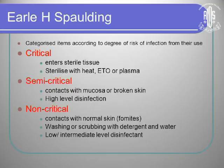Items are classified into critical, semi-critical, and non-critical. Critical instruments are those that enter sterile tissue, like scalp veins — they are sterilized with heat, ETO, or plasma. Implants and IOLs are also critical; you cannot just disinfect them, you must sterilize them. Semi-critical items contact mucosa or broken skin and need high-level disinfection. Non-critical items contact only normal skin.